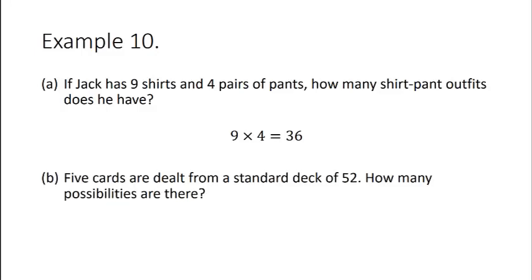Here's another example. If five cards are dealt from a standard deck of 52, how many possibilities are there? There are 52 ways to choose your first card, 51 ways to choose the next, 50 ways to choose the third, 49 ways to choose the fourth, and 48 ways to choose the fifth, for a total of 311,875,200 possible choices.